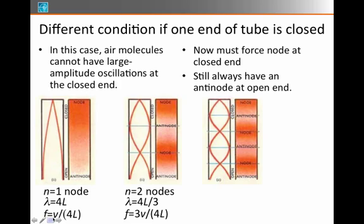The n equals 2 case, the actual wavelength here is 4 thirds L, because this is half a wavelength, and this is another half. So we need another a little bit. And the n equals 3 case, the wavelength is 4 fifths L.